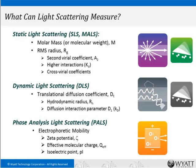The second type of light scattering is dynamic light scattering, which directly measures the translational diffusion coefficient of molecules in solution, from which we determine the hydrodynamic radius. Through concentration dependence, we can also derive a measure of interactions known as the diffusion interaction parameter. It's often called KD in the literature, but to avoid confusion with the equilibrium dissociation constant, I'll be calling it D1.